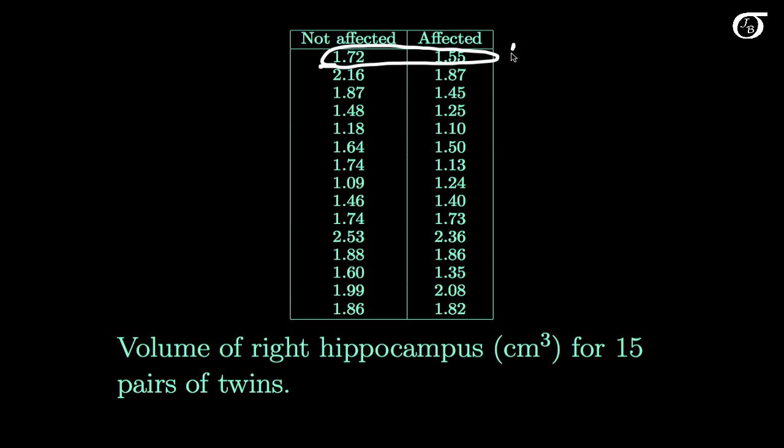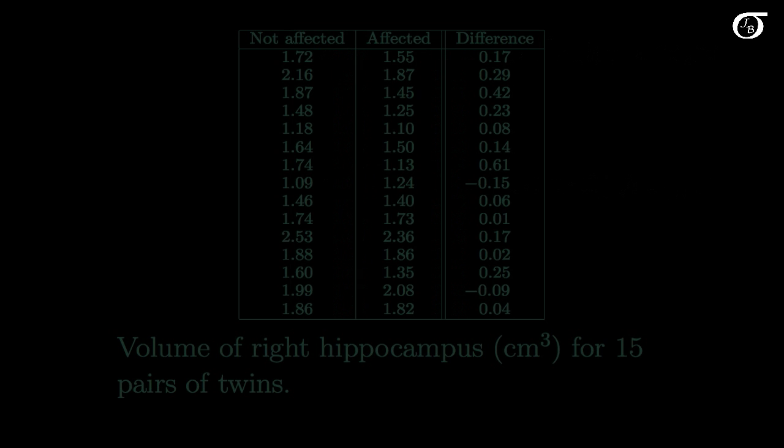My difference here is going to be 1.72 minus 1.55, and I'm going to get 0.17. That's my difference for that first pair. I do that for the second and third pair all the way along, and I would also keep the sign. Let's do one where we get a negative difference. Here we get 1.09 minus 1.24, so that's going to be minus 0.15, and we do that all the way along. If we carried that out for all those values, we would get what we see here.